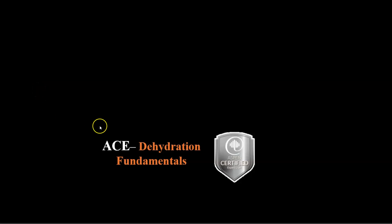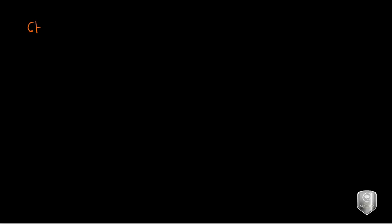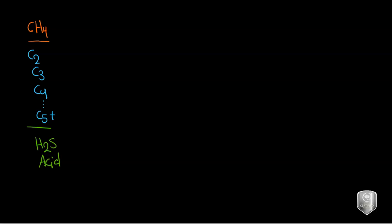The second topic in the ACE exam is gas dehydration. The composition of natural gas is mainly methane (CH4), and it also has other components like C2, C3, C4, up to C5+, as well as H2S and carbon dioxide, which are acid gases, and water. During the treatment process to get pure methane, we remove these hydrocarbons by condensate separation.